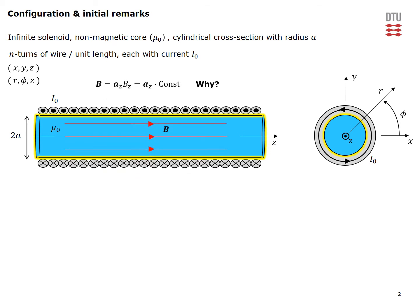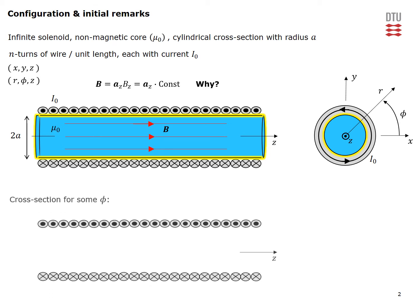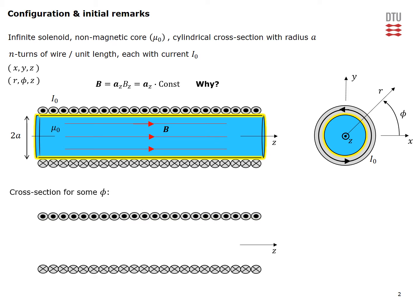We now postulate that the B field will only exist inside of our infinite solenoid. It will have a z component, and this z component will have a constant value in the non-magnetic core. We would now like to present a brief argument for why this must be the case. Consider a cross-section of our configuration for some angle phi, shown on the figure below. In this cross-section we can view the fields as a superposition of fields due to infinite surface current sheets.